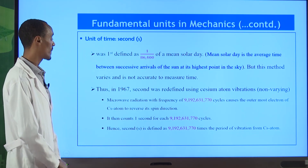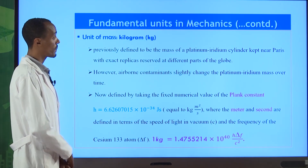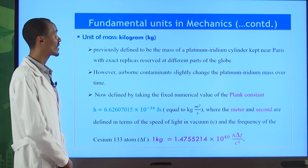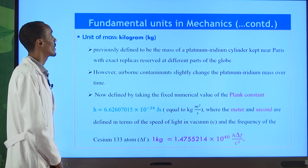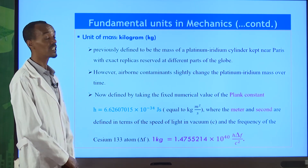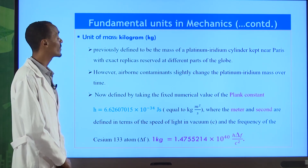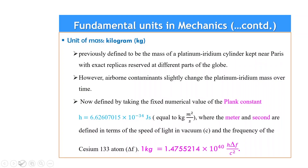One second is defined as a specific large figure multiplied by the period of vibrations of the cesium atom. This definition is currently accepted. Finally, for mass: initially the kilogram was defined by the mass of a platinum-iridium cylinder kept near Paris, replicated and distributed worldwide. However, this was problematic because mass changed due to airborne contaminants.